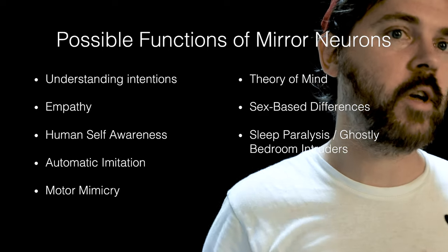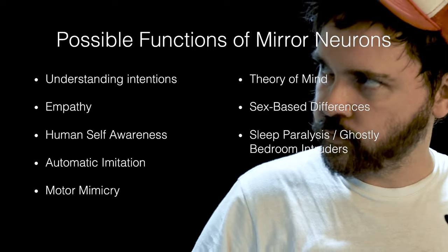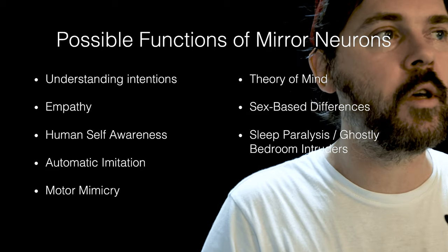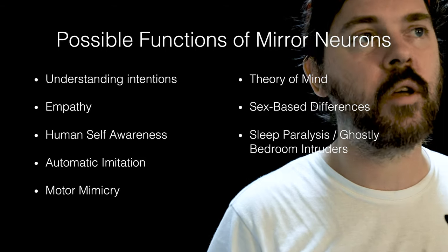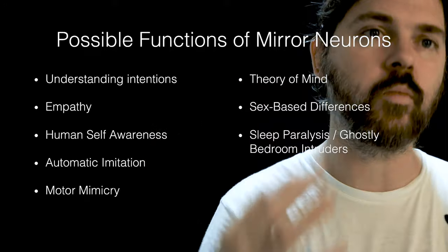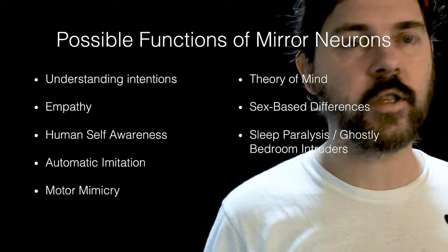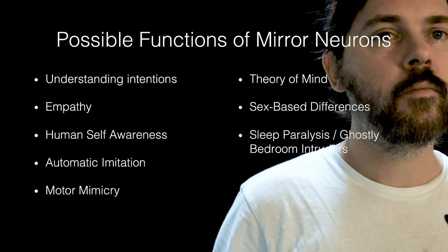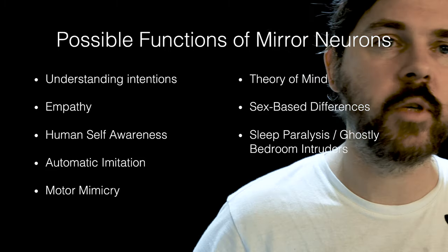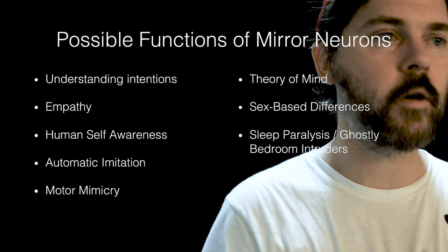I took out a few catchwords of what mirror neurons can do because I find them so motivating: allowing empathy, self-awareness, automatic imitation, mimicry, theory of mind — trying to understand what another person thinks — and sex-based differences. Some of the things we'll see have to do with body alterations, which also means going into the skin of another human being.